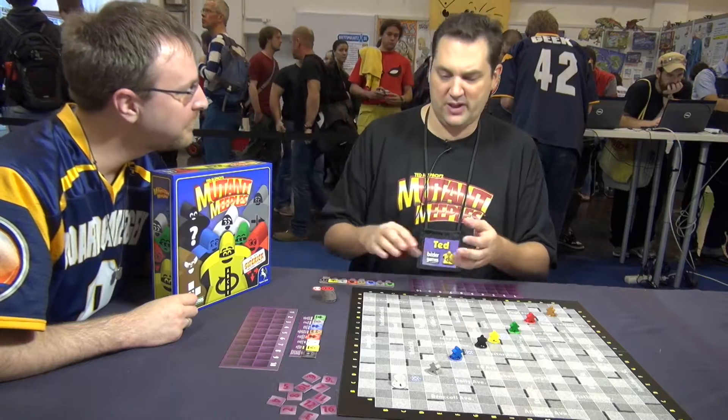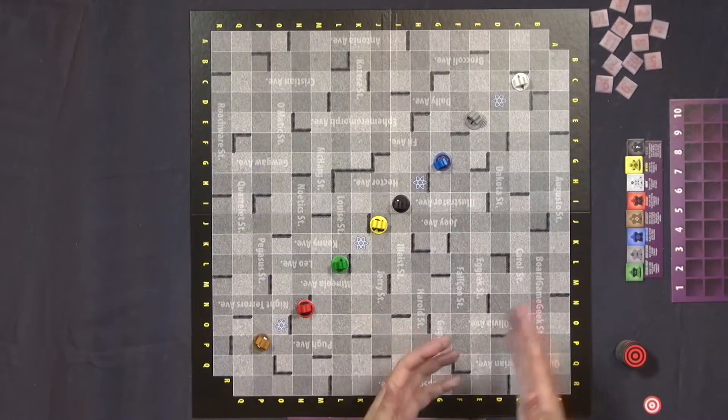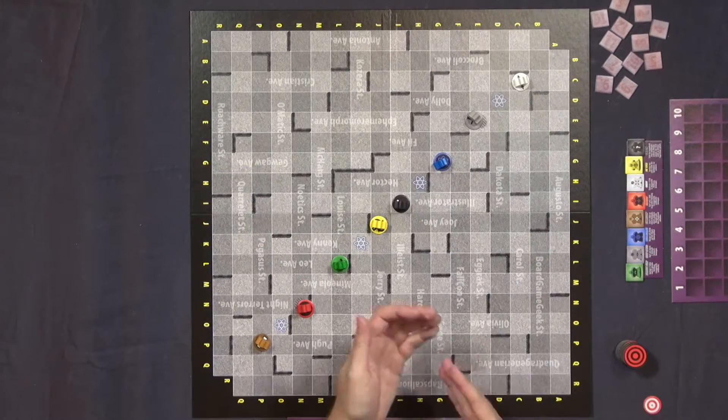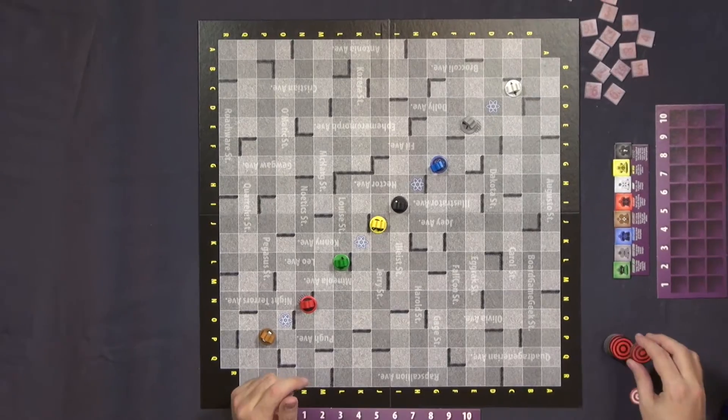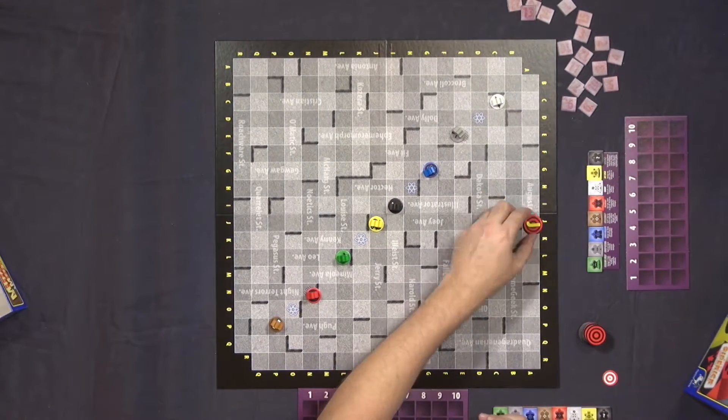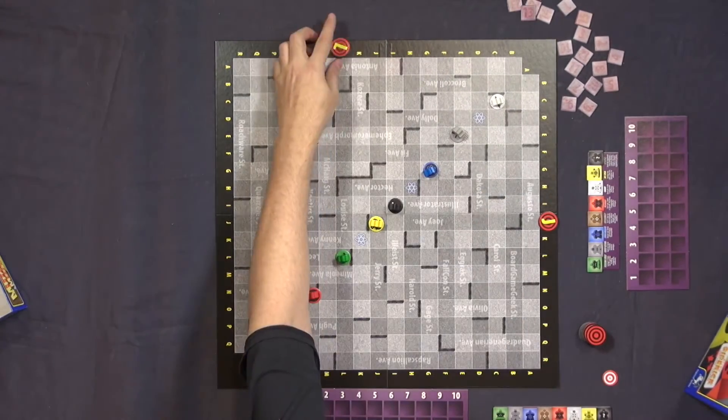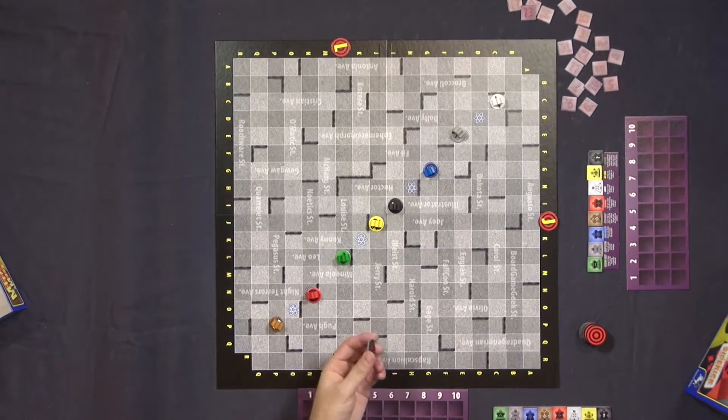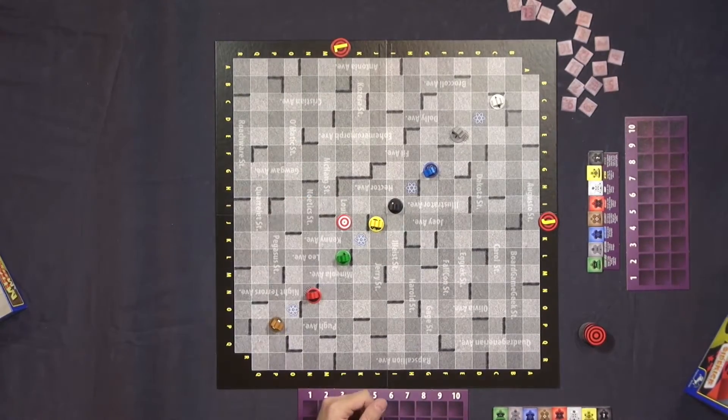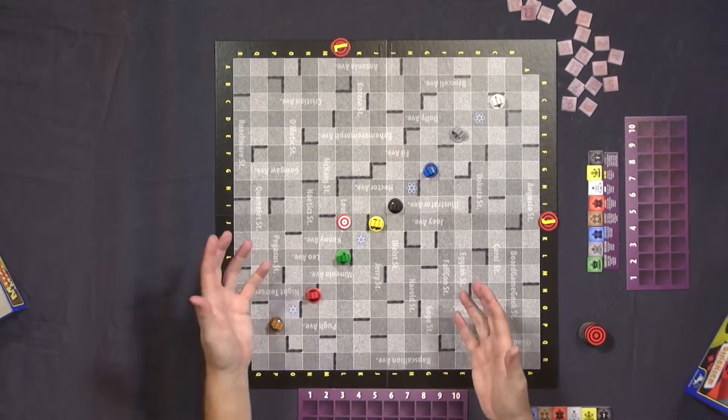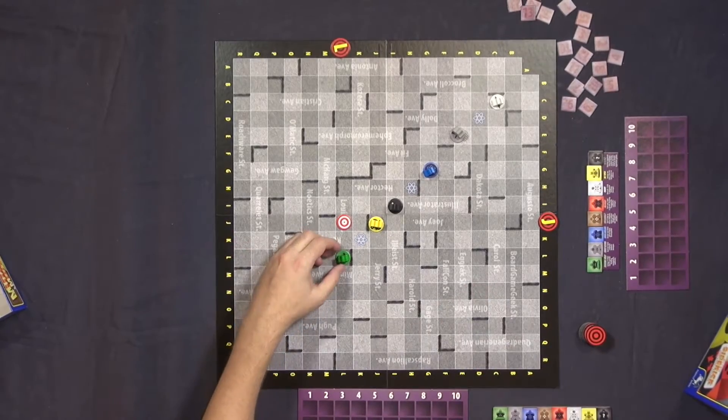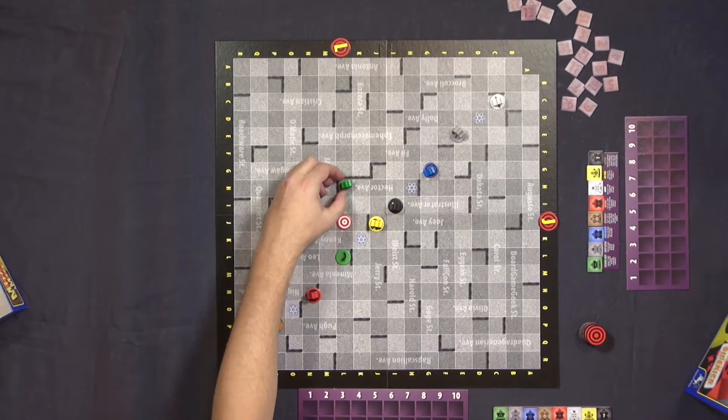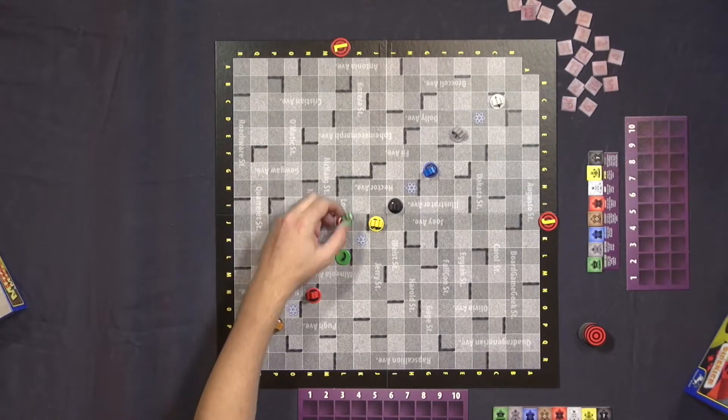If you've ever played Ricochet Robots, there's a similar mechanism in terms of how they move. They slide around the board. What will happen to start with is we'll turn over two of these, so J and L. That'll determine where the scene of the crime is. So it's right there. Looks like it's really close to a bunch of them. However, the way they move is they move until they hit something and then they stop. So it doesn't really help.